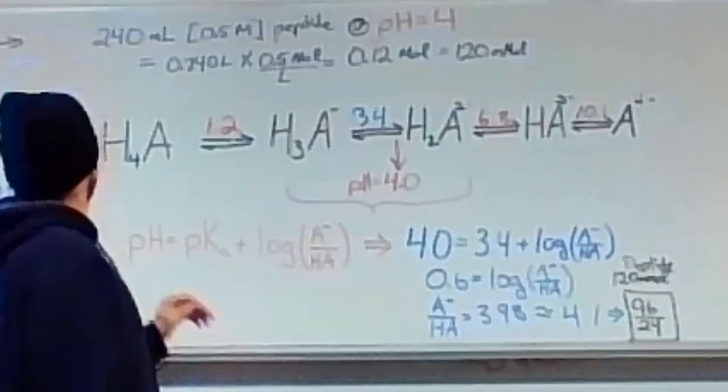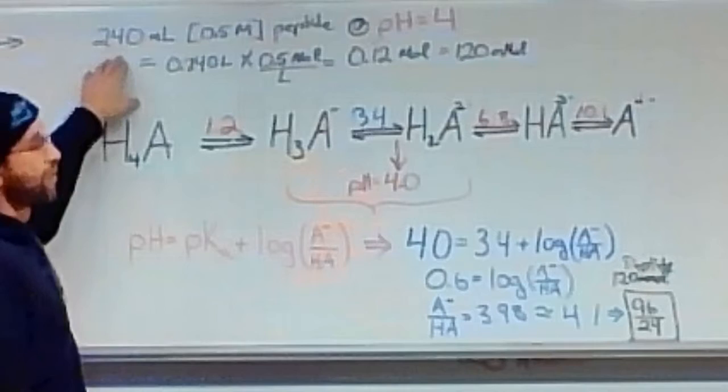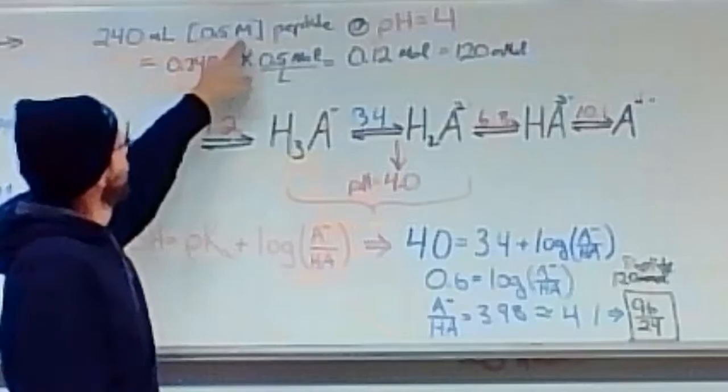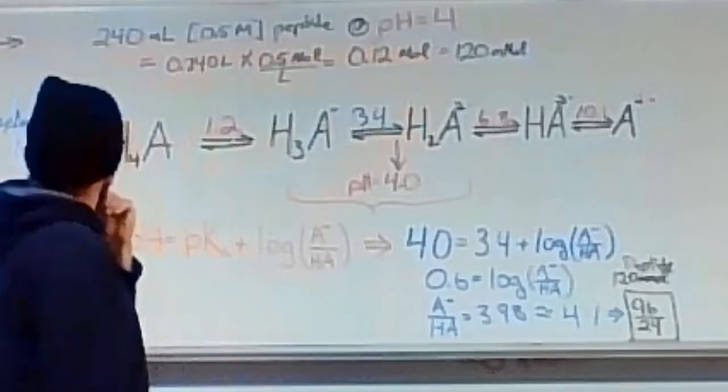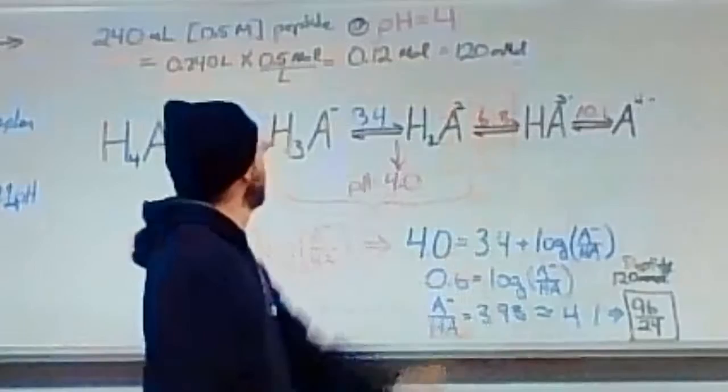Given that we have a polyprotic buffer system, we would set up an ice equation. In our problem from question number two in exam one, we had 240 milliliters of 0.5 molar concentrated polypeptide at a pH of 4. Let's quantify that. Do a little math. We end up with 120 millimoles of polypeptide.